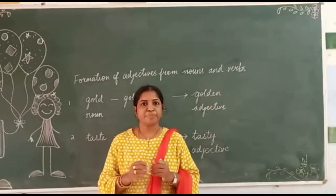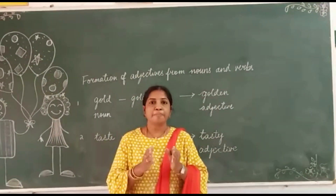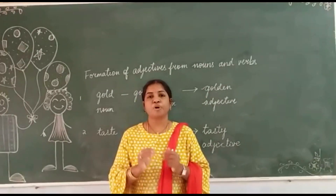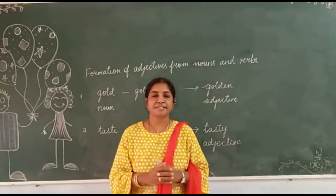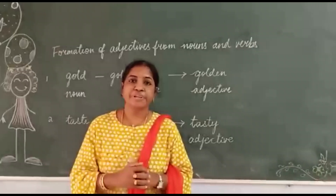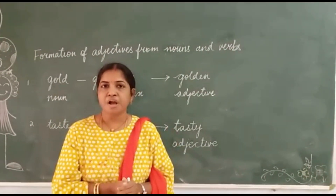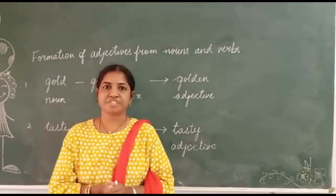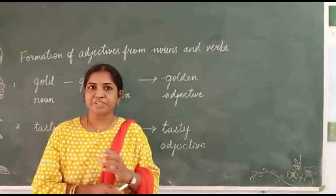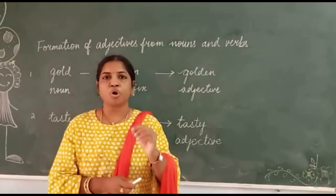Adjectives can be formed by adding a group of letters to the base word to form an adjective, and these group of letters are called suffixes. I think you have heard of this word in your previous classes. The group of letters which are added at the end of the word are called suffixes. Let us check with examples what suffixes can be added to the noun or verb to form the adjective.